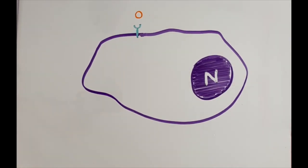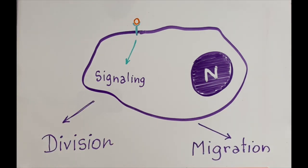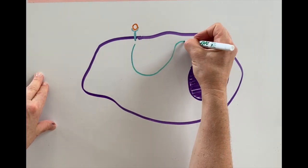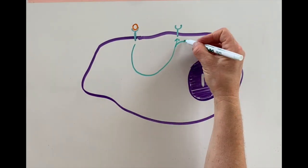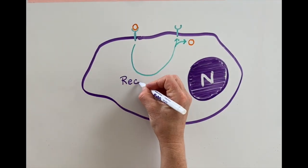Cells rely on receptors expressed on the cell surface to relay key signals that lead to crucial functions, including division and migration. Therefore, we studied how receptors are returned to the cell surface once internalized.